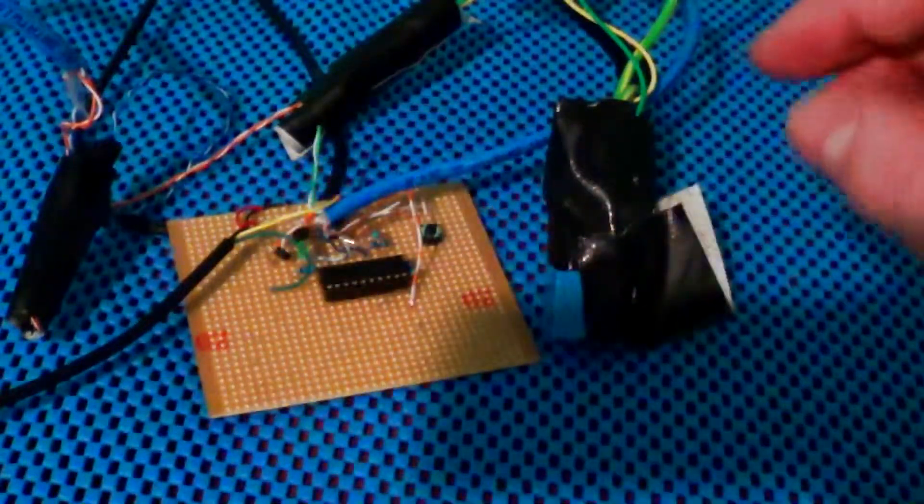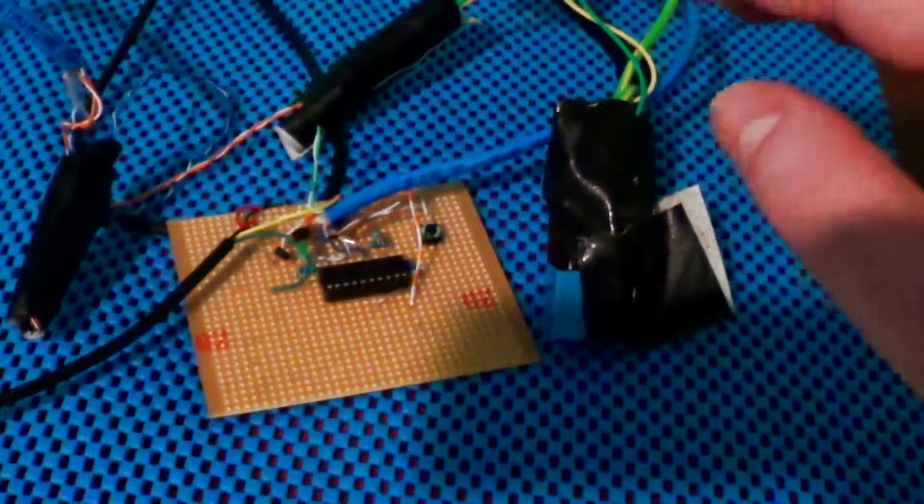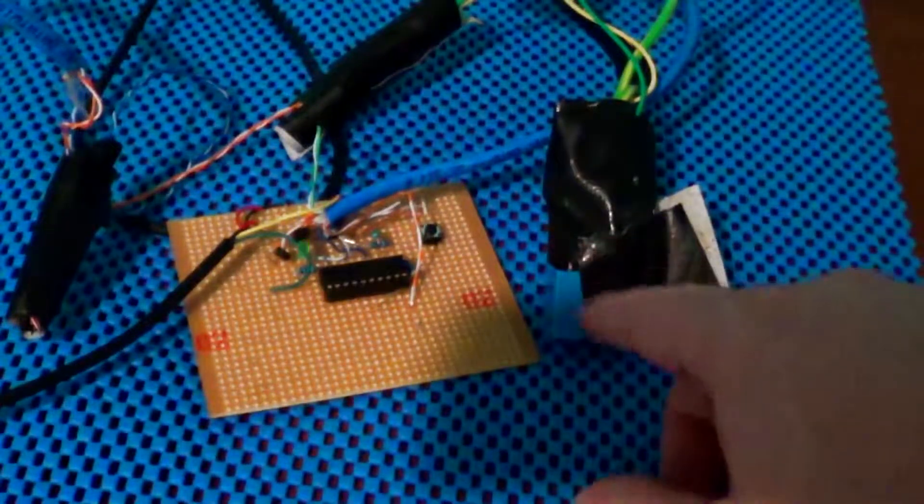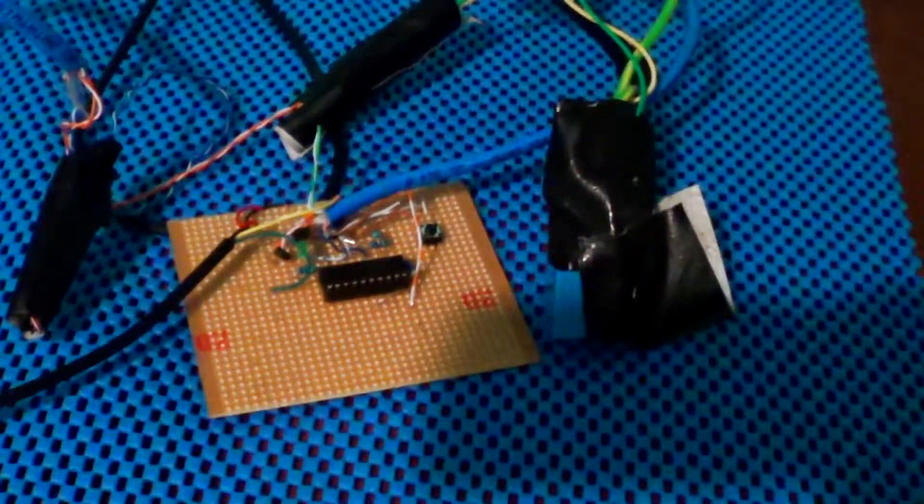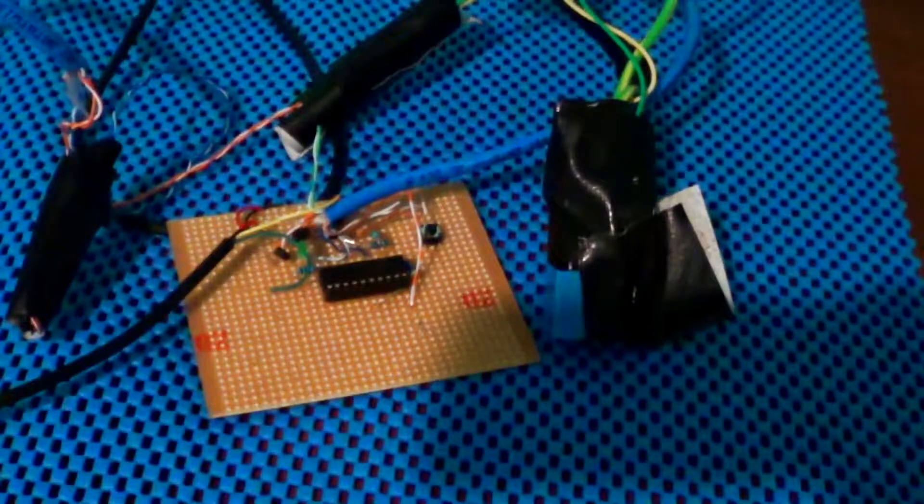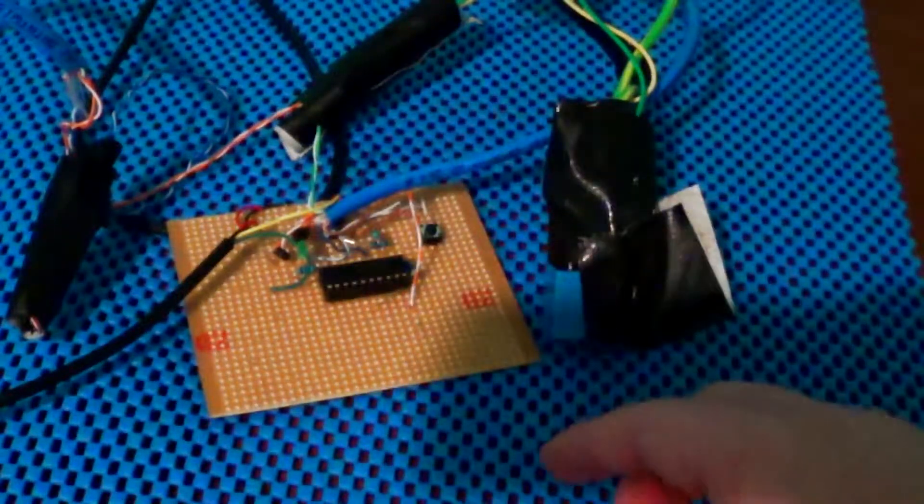So it heats up, when it gets to a temperature threshold it turns off the coil with this relay so that there's no more heat, but the dryer continues working and then it cools down and then it turns it back on when it's finished.